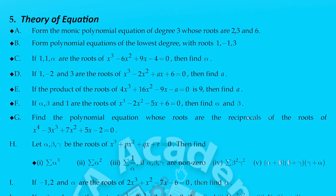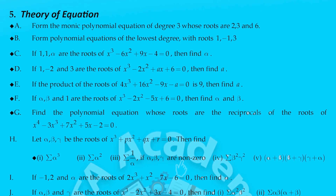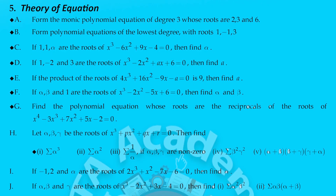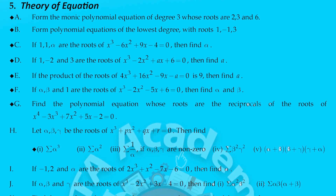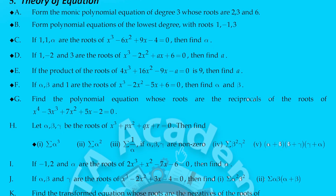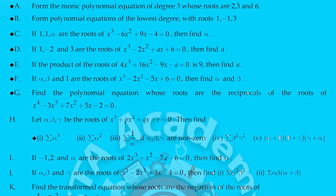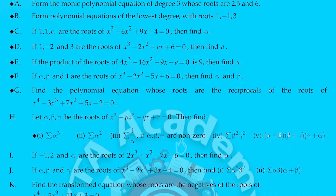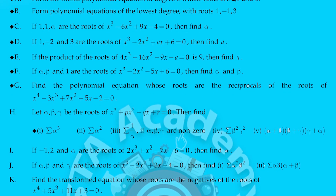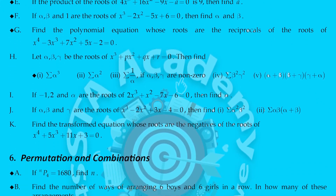Next is theory of equations — another very important chapter. It carries 2 plus 7 marks: one question for 2 marks and another for 7 marks. I have given questions for theory of equations A to K, with very important questions listed. The first question is: form the monic polynomial equation of degree 3 whose roots are 2, 3, and 6.